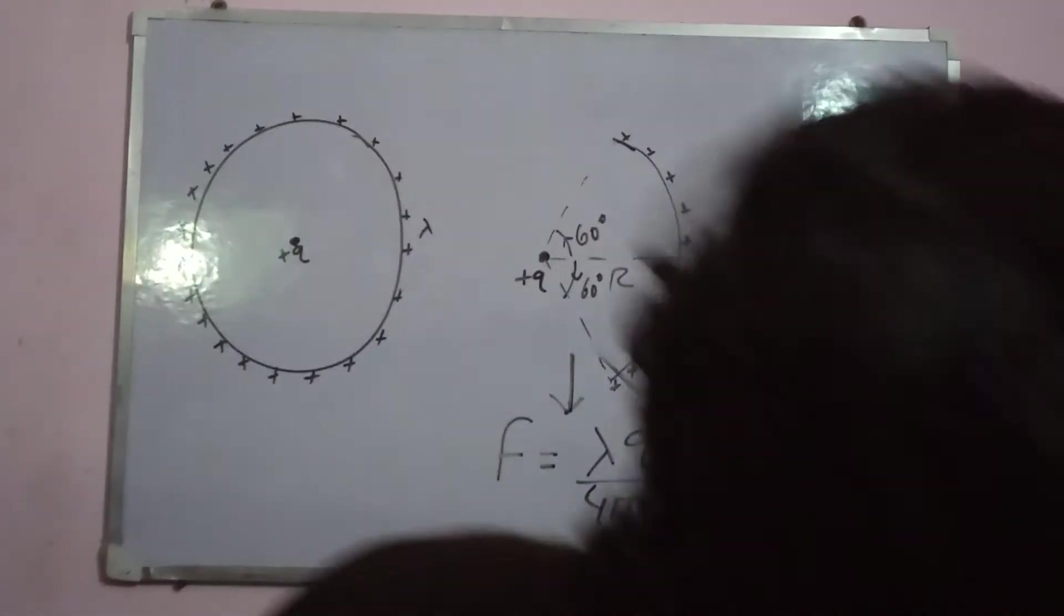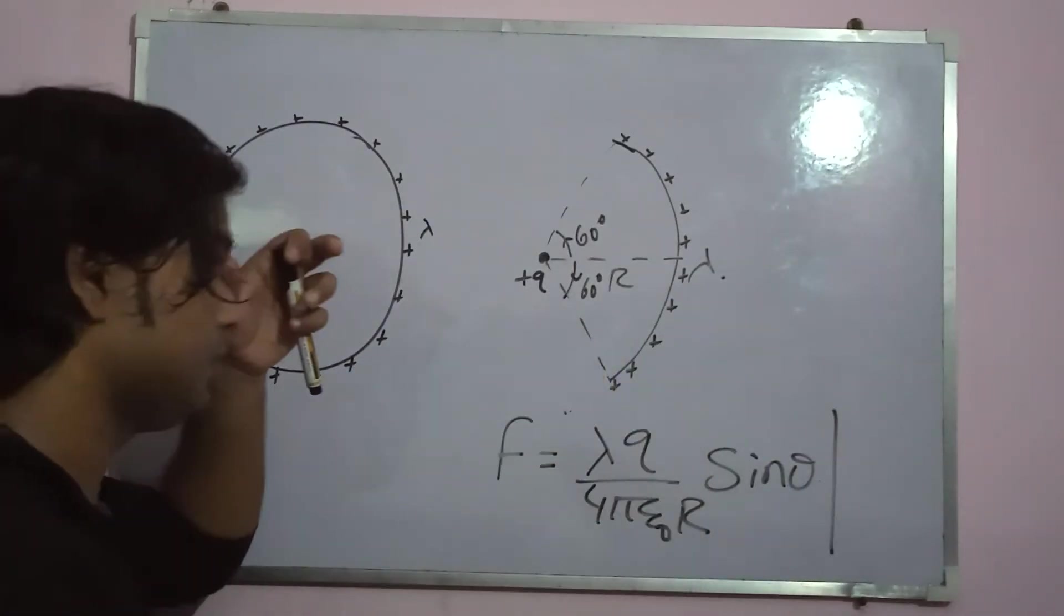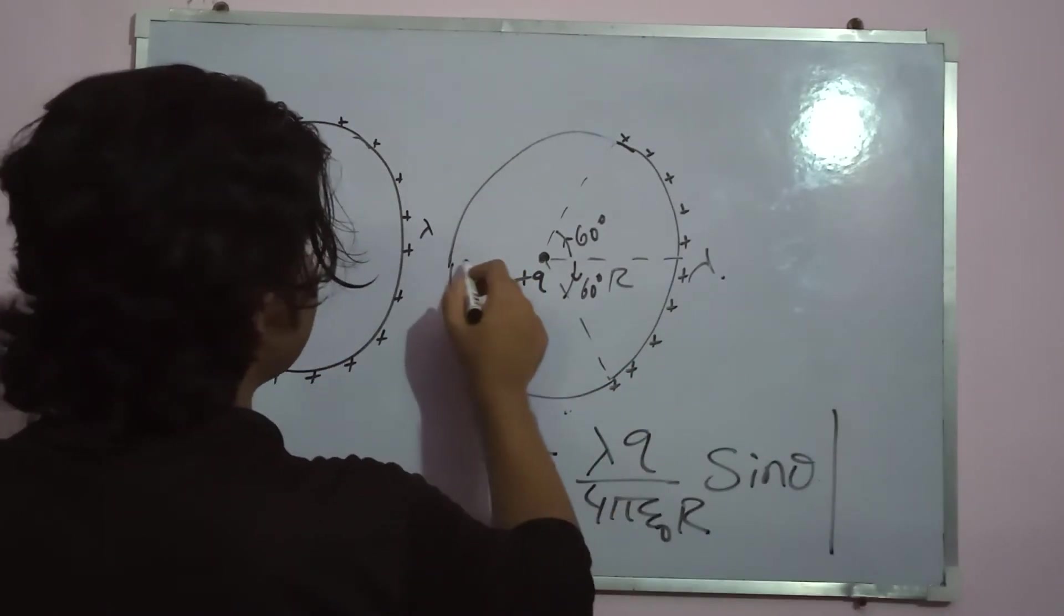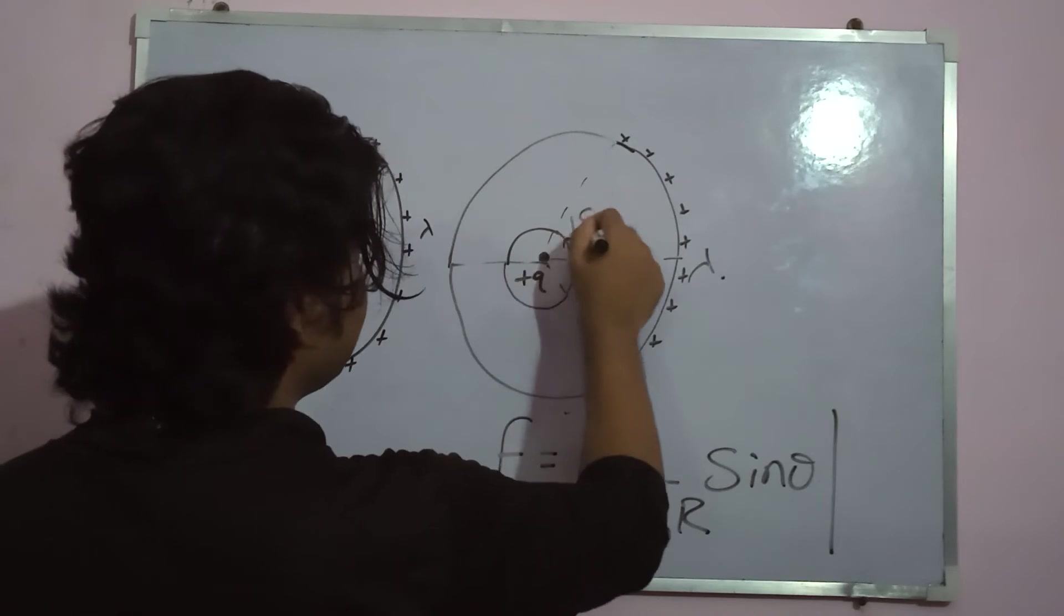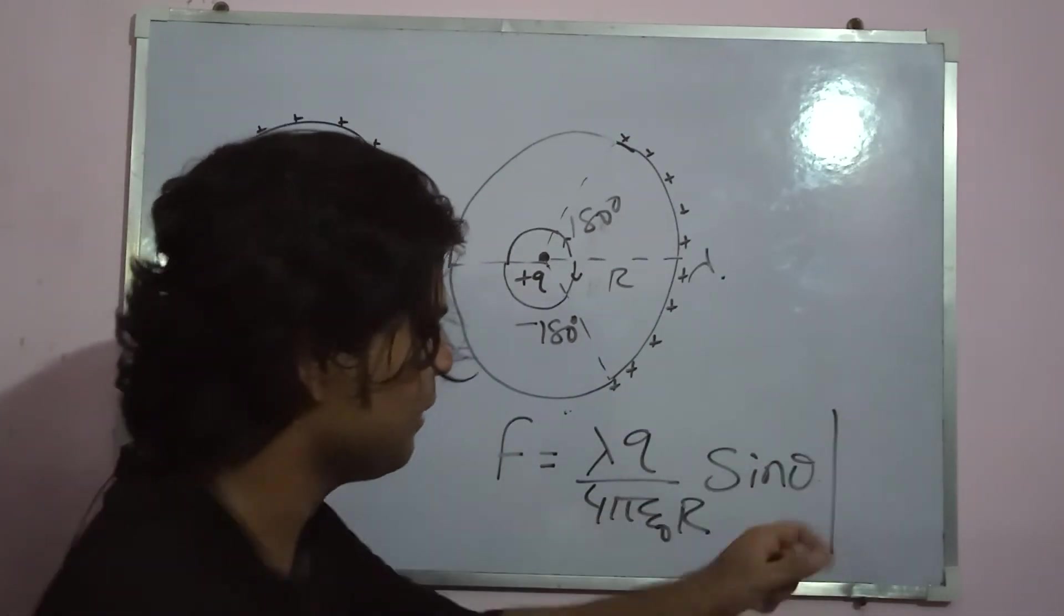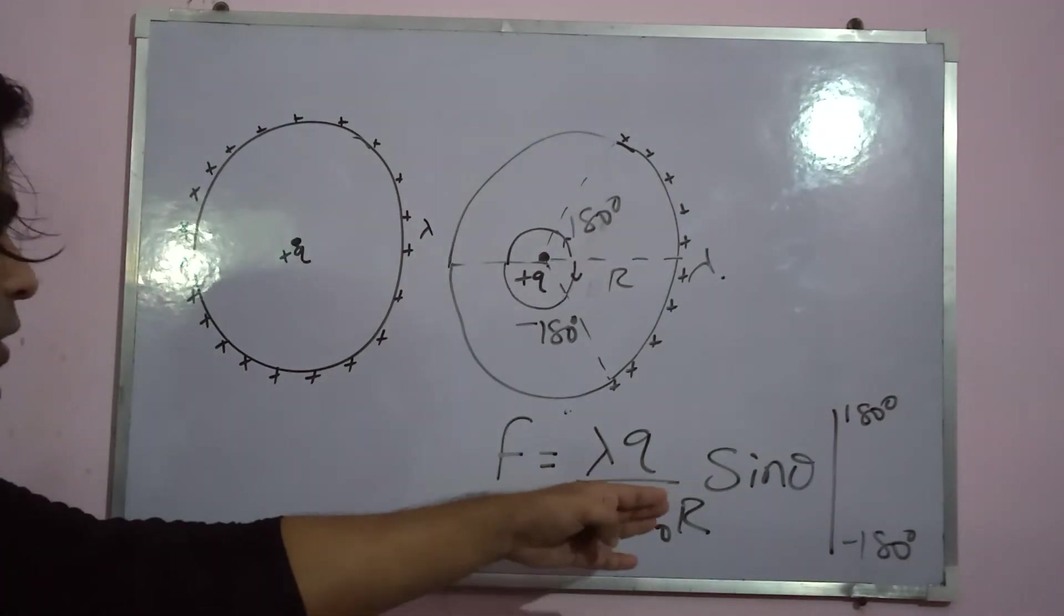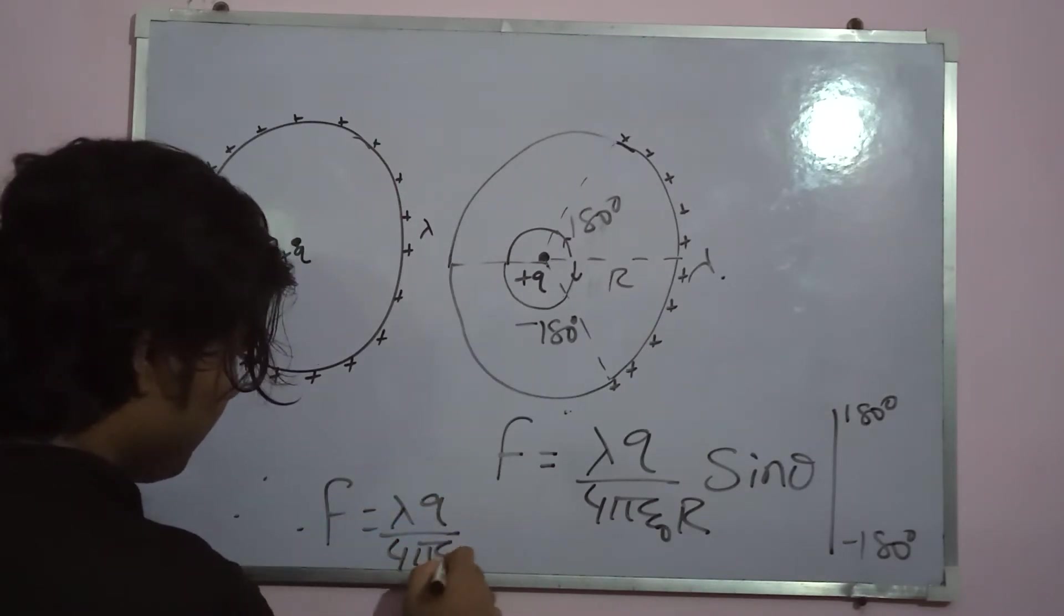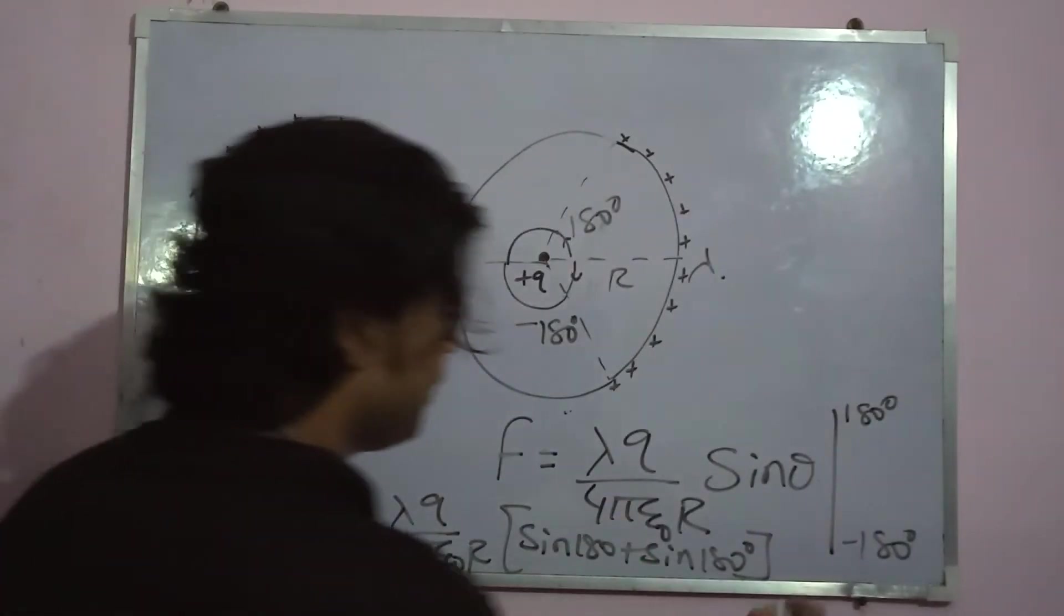Now, this angle will be 180 degree positive, and this angle will be 180 degree negative. I just have to replace these limits. Plus 180 degree and minus 180 degree. And now everyone knows what's the solution. Definitely putting the value this and this, I get f is equals to lambda q by 4 pi epsilon naught r sin 180 plus sin 180. So simple. What's our result? Zero.